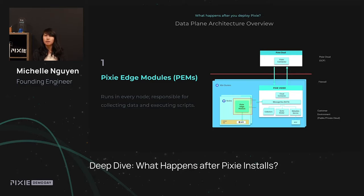First, we have the Pixie Edge Modules, or PEMs for short. These are agents that we deploy to every single node on your cluster using a Kubernetes daemon set. These PEMs are responsible for collecting data using eBPF and storing it in memory in your cluster.